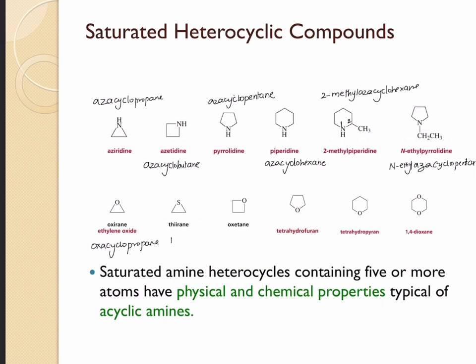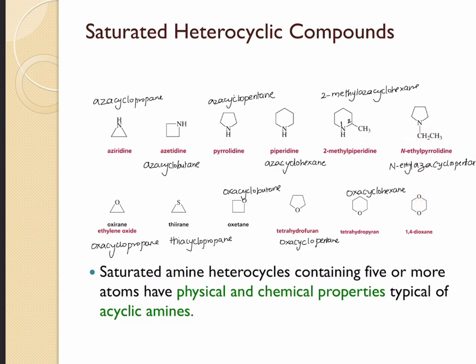On the next structure we have four atoms, therefore this should be oxa cyclobutane. Here we have five atoms, so this should be oxa cyclopentane. And with six atoms, this should be oxa cyclohexane.